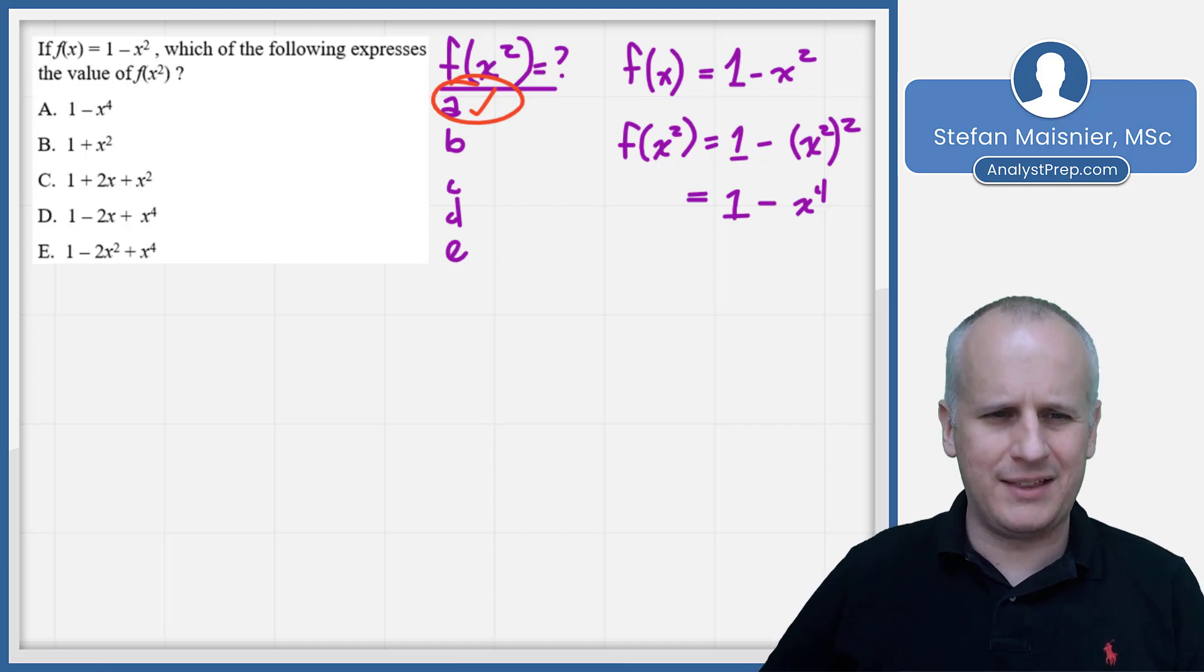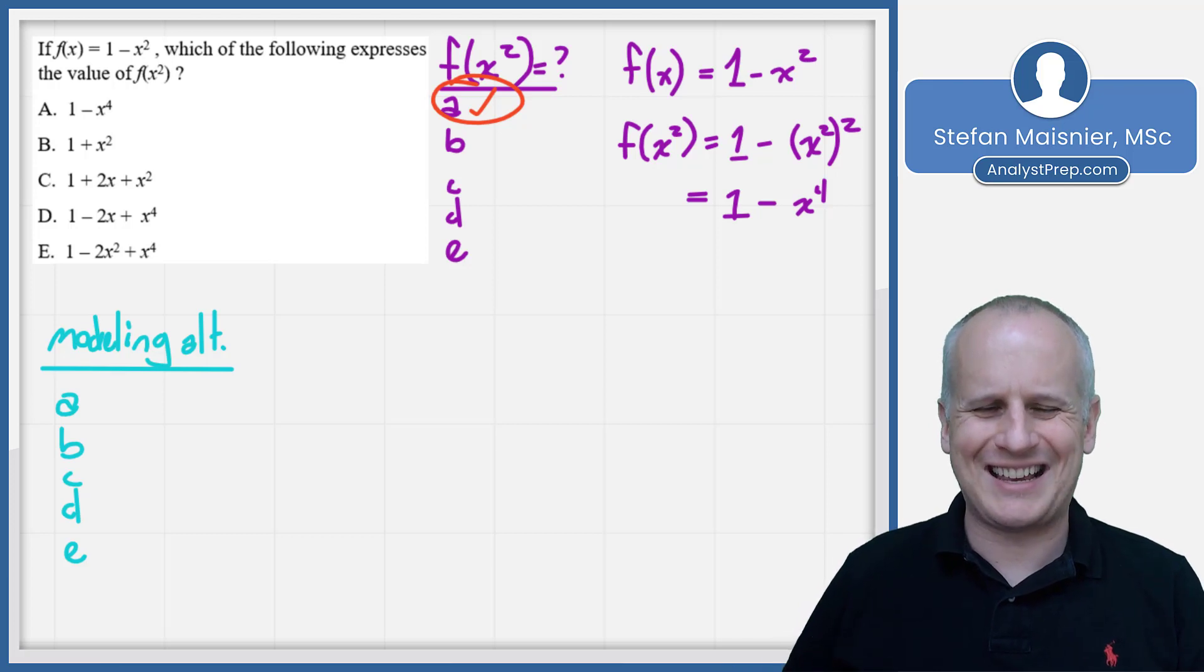However, if you're not confident in the technical approach, you can always do our modeling alternative here. We're going to set up our scratch work with a, b, c, d, e, and we're going to choose a value for x that isn't in the answer choices. So that means I'm probably going to stay away from 1, 2, and 4. But I could just say x is equal to 3 as a really easy value. So we need to find out that x squared would be 9.